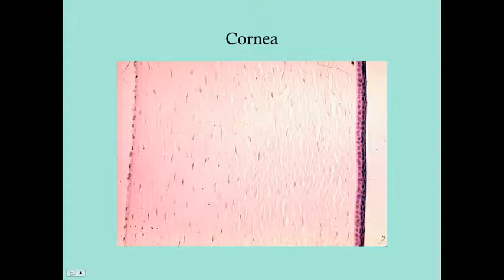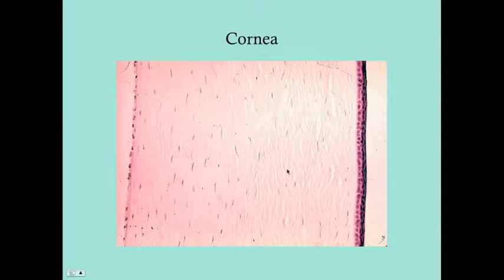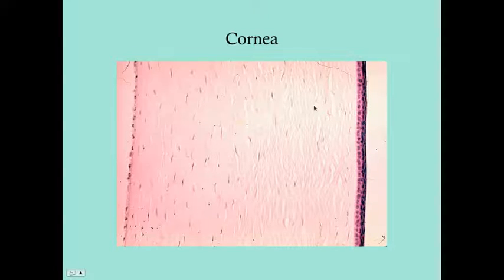Here is a histology of the cornea — you don't need to memorize this, this is step one material, but it helps to understand what the cornea is and what it looks like. On the outside you have a stratified squamous epithelium, then a thin layer called Bowman's membrane. The thickest layer is the stroma, made up of collagen. Then you have Descemet's membrane, which is the basement membrane for the stroma, followed by the endothelium, and then interior to that is the anterior aqueous.